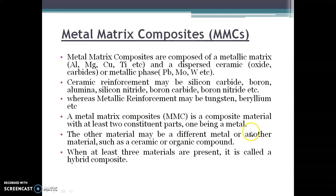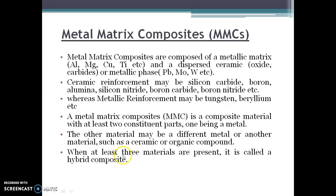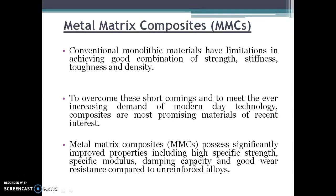A metal matrix composite is a composite material with at least two constituent parts — one being the metal and the other may be a different metal or another material such as ceramic or organic compound. When at least three metals are present, it is called a hybrid composite.